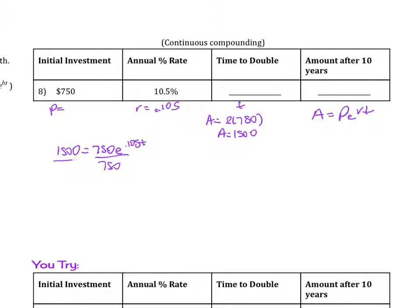You see how we solve. So divide by 750 on both sides. You get 2 equals e to the 0.105t. Take the natural log of both sides. So this is natural log of 2 equals 0.105t and divide by 0.105. So time is going to be approximately 6.60 years.